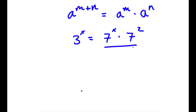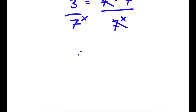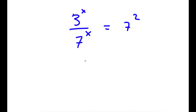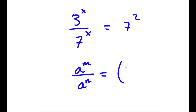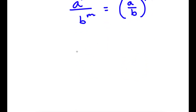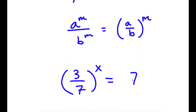Now, I'm going to go ahead and divide both sides by 7 to the power of x. So then these two cancel out, and now I'm left with 3 to the power of x over 7 to the power of x is equal to 7 squared. Now, if I have something in the form a to the power of m over b to the power of m, this is equal to a over b to the power of m. So 3 to the power of x over 7 to the power of x equals 3 over 7 to the power of x, which is equal to 7 squared.